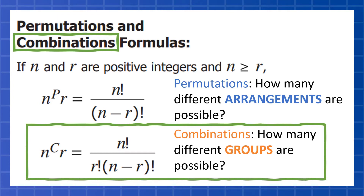For example, if I were to pick three people to volunteer to help me with something, I'm just picking three people. I'm not going to say you first, you second, you third, and give you three different jobs — that would be a permutation. So let's look at some real examples.